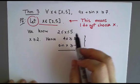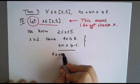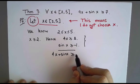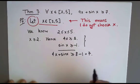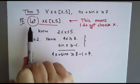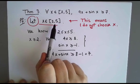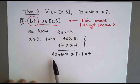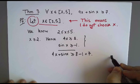Now, putting those two things together, if I simply add them up, I'm going to get that 4x plus sin(x) is greater or equal than 8 minus 1, which is 7. And so what I've done is, taking a generic element between 2 and 5 and using nothing specific about it, I've concluded that this expression is always greater or equal than 7. So this completes the proof.